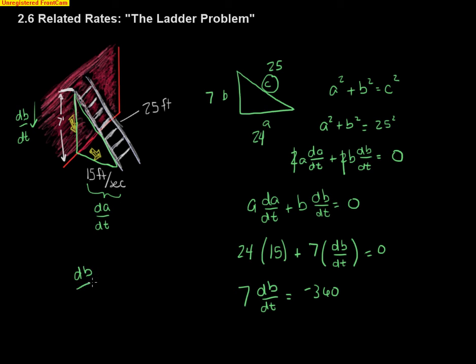So db dt is equal to a negative 360 divided by 7, which comes out to be a negative 51.429, and that's feet per second. So that's our answer to the ladder problem that we did in class.